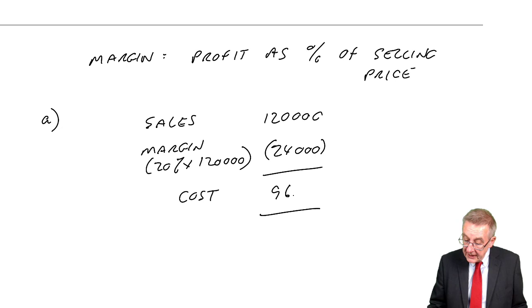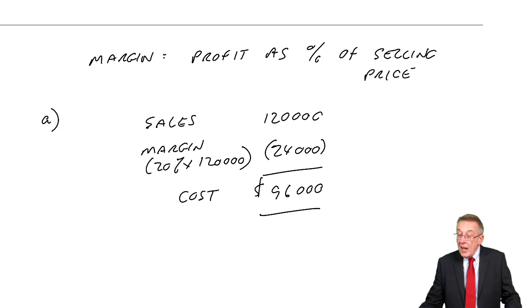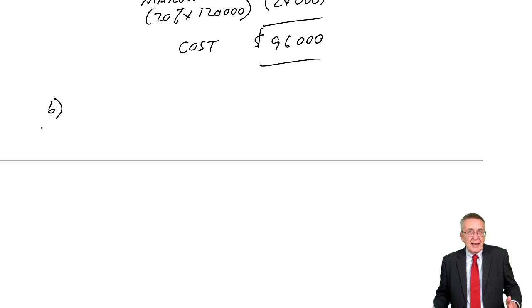So again, apart from terminology, that I think is nice and easy. But make sure you're clear about the difference. Markup is a percent of cost. Margin or gross profit percentage is a percentage of selling price. But again, they can have you apply that, as you understand, backwards. Look at B.